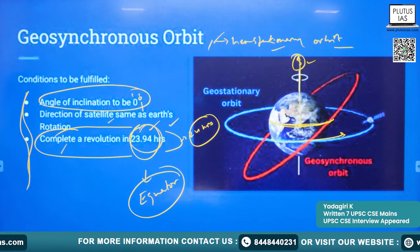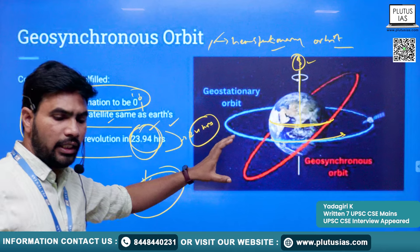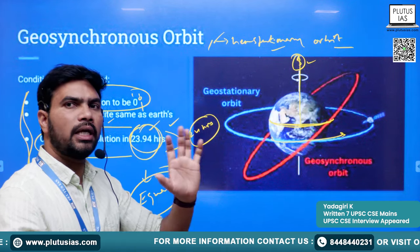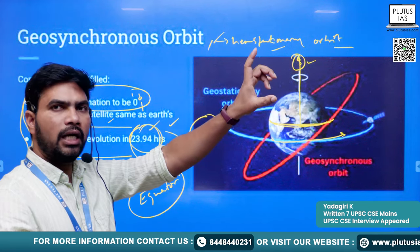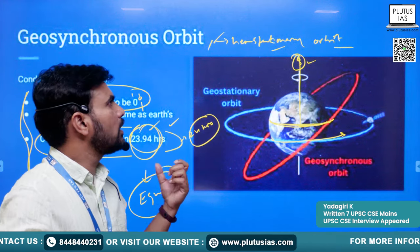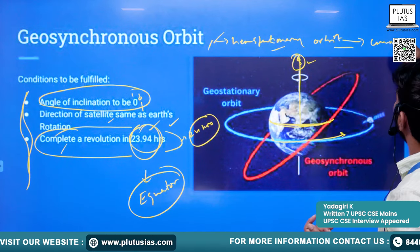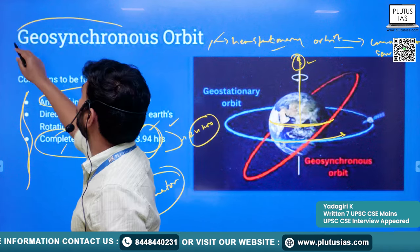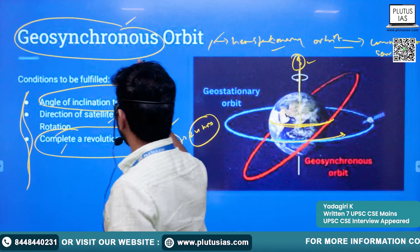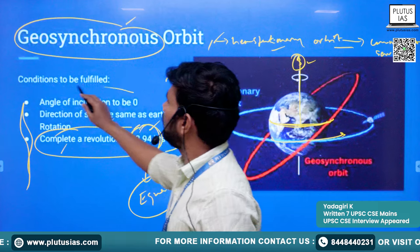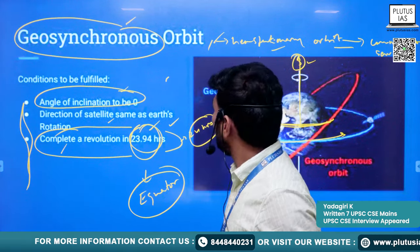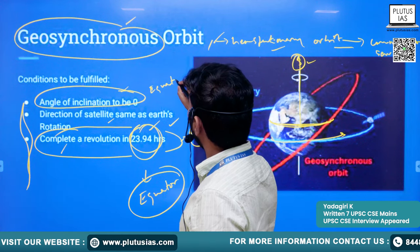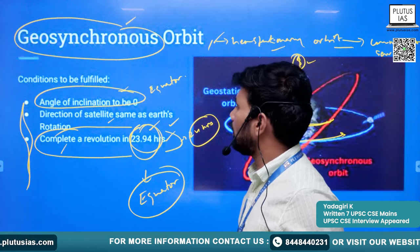When these three conditions are fulfilled, the satellite is known as a geostationary satellite. It is called geostationary because when we see it from the earth's surface, it always appears stationary. Such a satellite is very well suited for communication services. For a geosynchronous satellite, the first condition — zero angle of inclination — need not be fulfilled; the satellite need not be placed directly over the equator.